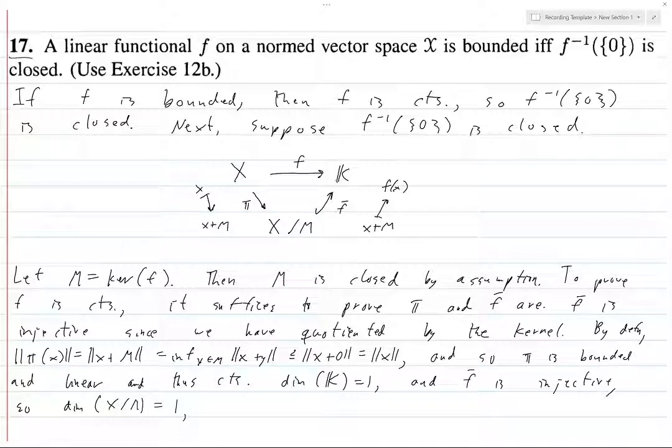f bar is a linear map between finite dimensional vector spaces, so it's continuous.